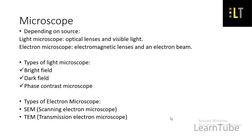Depending upon the source of illumination, the microscope can be classified into two types: the light microscope and the electron microscope. In the light microscope, optical lenses are used, whereas in the electron microscope, electromagnetic lenses are used. Visible light is used as an illumination source in the light microscope, and an electron beam is used in the electron microscope. The different types of light microscope include bright field, dark field, and phase contrast microscope, whereas electron microscopes include SEM (scanning electron microscope) and TEM (transmission electron microscope).